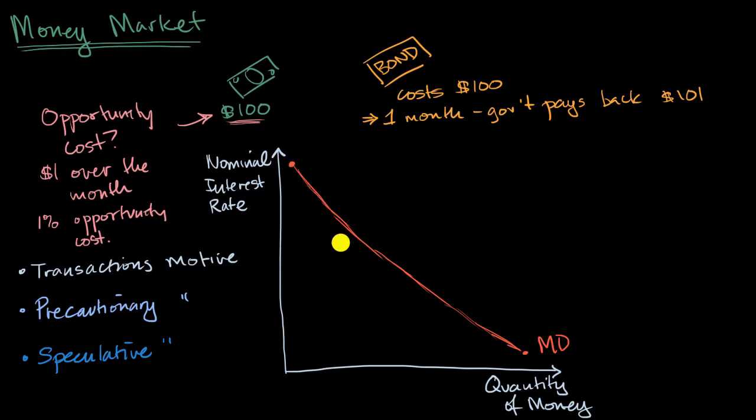So we've spent a lot of time justifying why we have this downward-sloping demand curve for money, but you're probably asking, well, this is a market. We need to think about an equilibrium point, and to do that, we need to think about the supply of money.